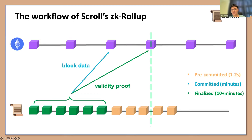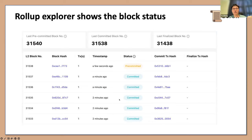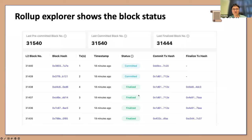The finalization time differs because it's not only influenced by proof generation time. If you have lower throughput in your network, it takes longer because you need to wait for a larger batch to amortize the verification cost over more transactions. We have a live testnet where you can see transaction status: pre-committed is a few seconds, committed is usually minutes, and finalized is after maybe 10 to 20 minutes, depending on throughput and how many provers you have in your network.